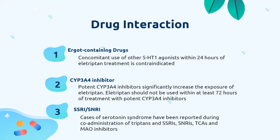What are the drugs to avoid while the patient is on allotriptin? First, ergot-containing drugs: concurrent use of other 5-HT1 agonists within 24 hours of allotriptin is contraindicated. Another one will be CYP3A4 inhibitors, which will increase the plasma concentration of allotriptin if co-administered together. Allotriptin should not be used within 72 hours when the patient is on a potent CYP3A4 inhibitor. Lastly, SSRIs and SNRIs should be avoided, as cases of serotonin syndrome have been reported when patients are co-administered with allotriptin and these medications.